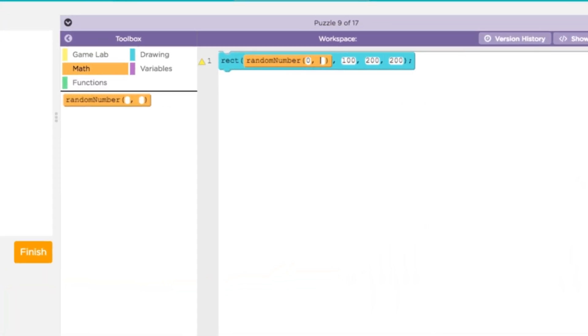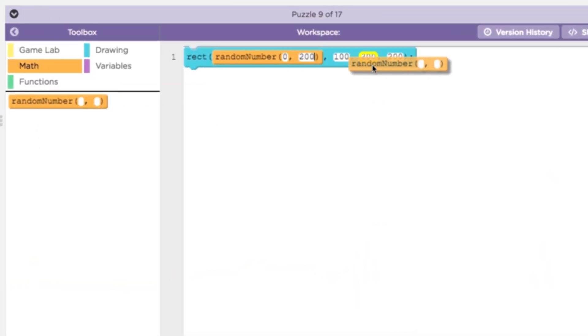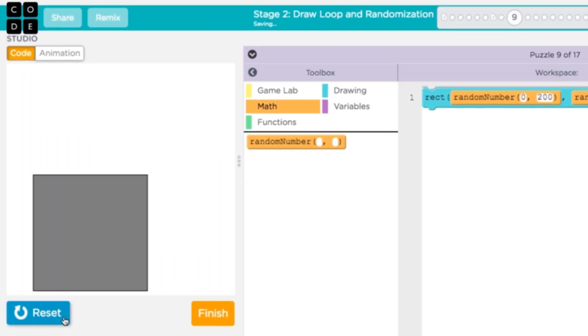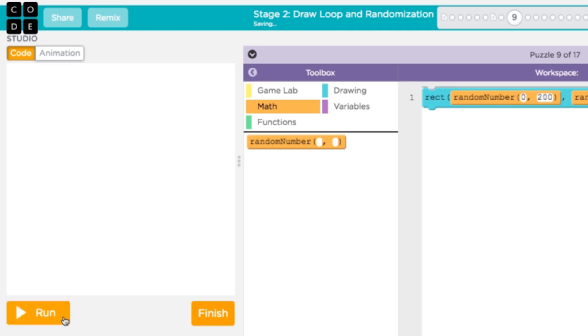Here's a simple program that draws a single rectangle with a random X position and a random Y position. If we run and reset this program over and over again, we can see that it draws the rectangle in a new position each time.